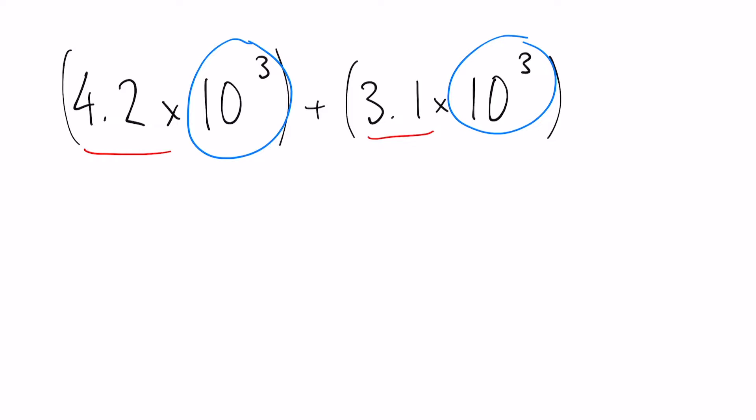all you have to do is simply add the front numbers and you will have your answer. So 4.2 plus 3.1 makes 7.3, and then the power will stay exactly the same. So this is your final answer: 7.3 times 10 to the 3.